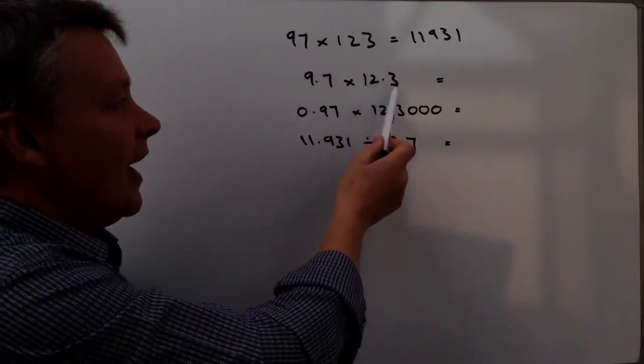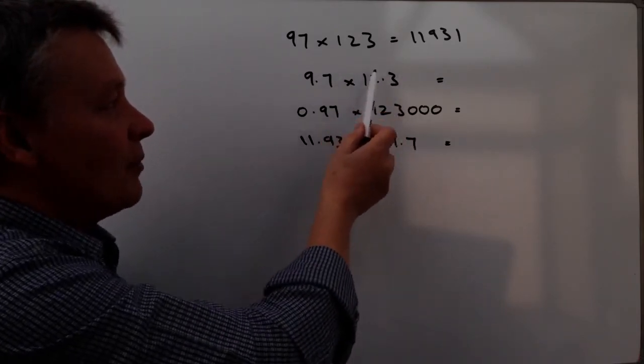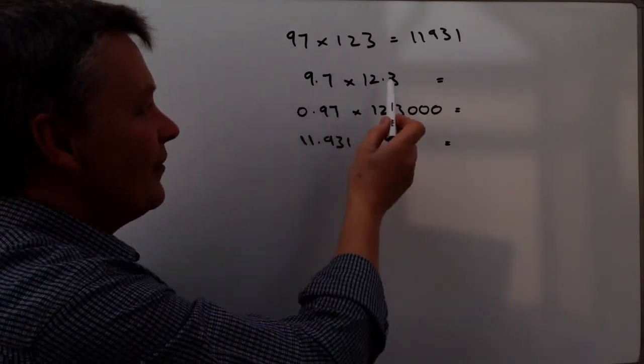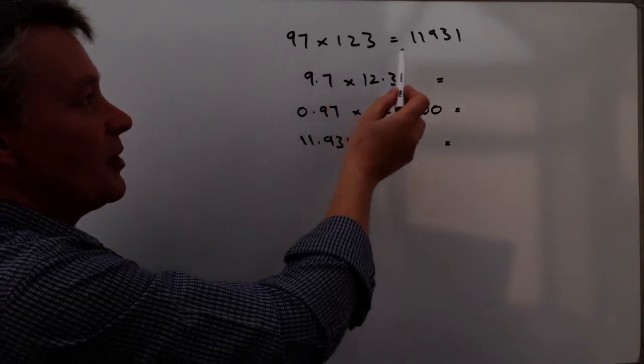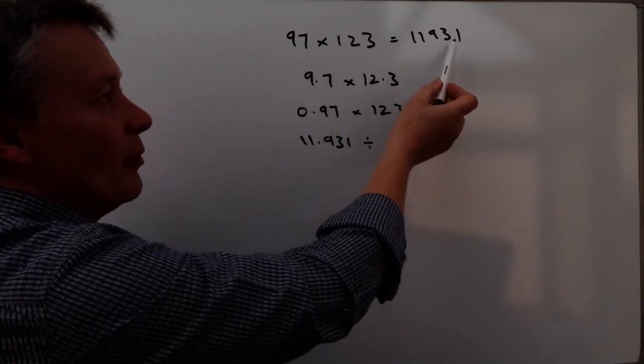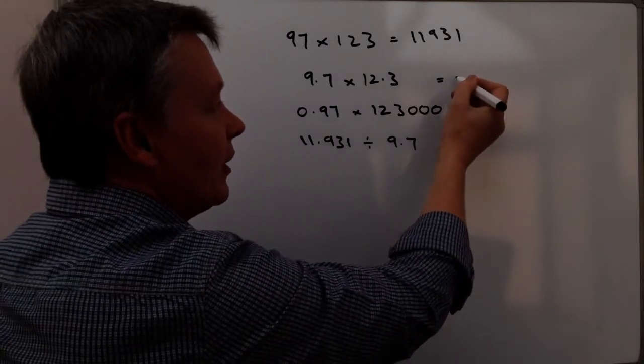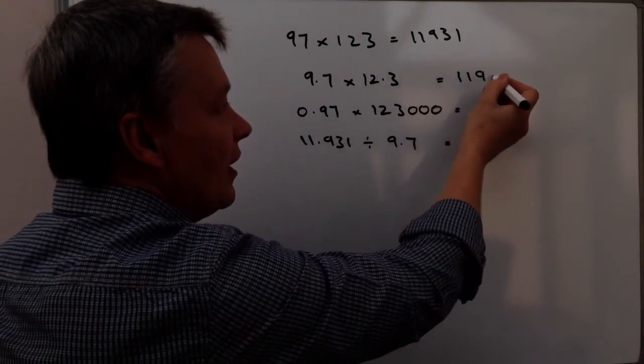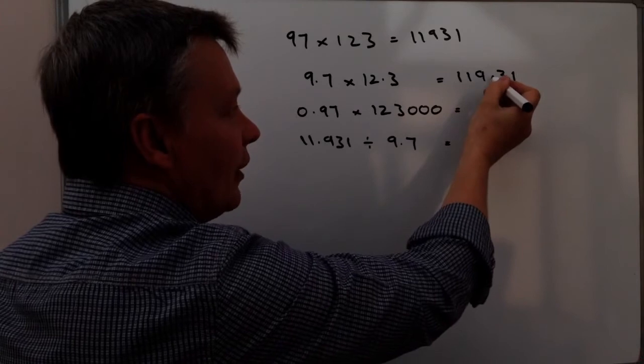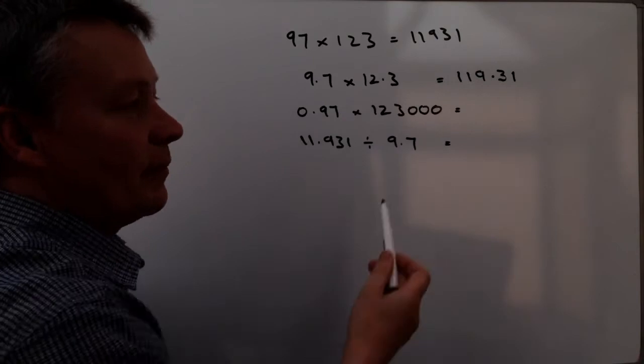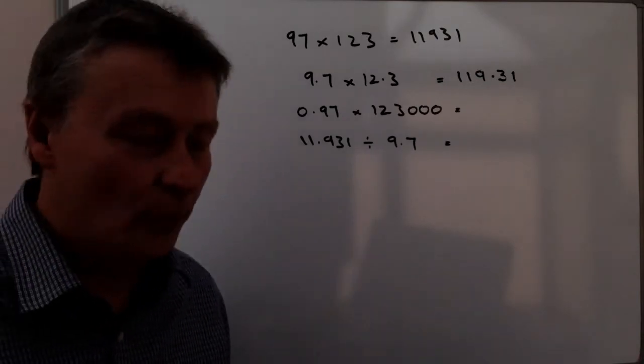And again, 123 has become 12.3. So it's actually moved it twice. So to answer this question, you would just simply move the decimal point at this answer twice. So it would become 119.31 because we've gone from here and then we've moved it once, twice. So it becomes 119.31.